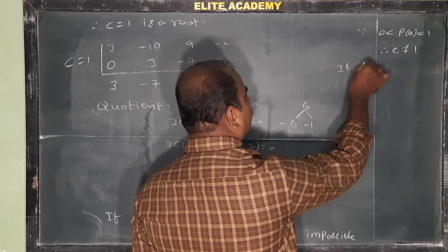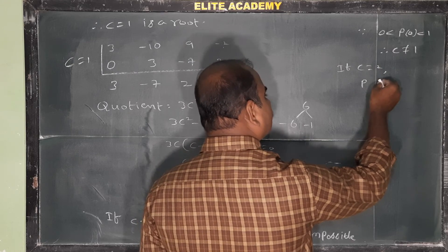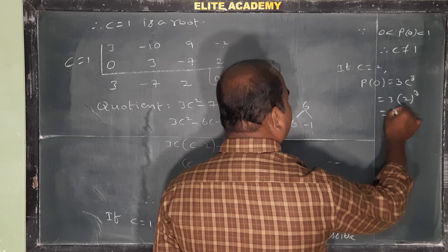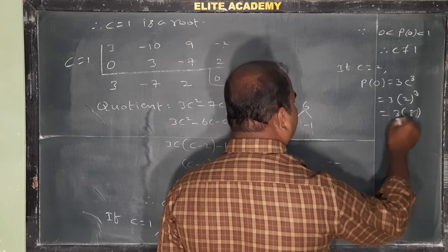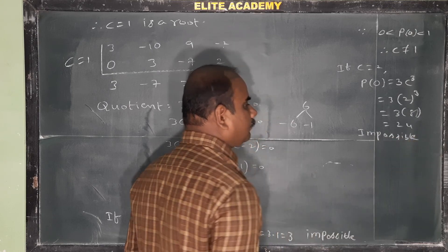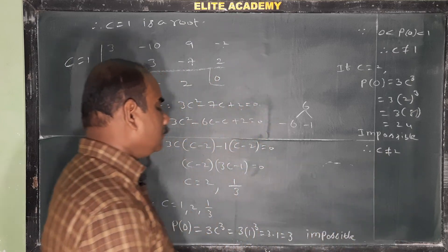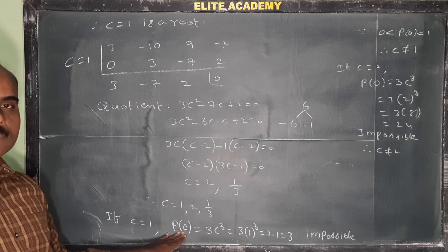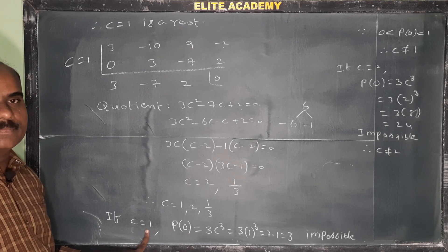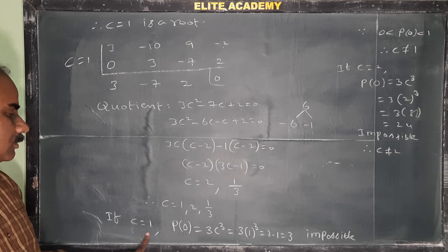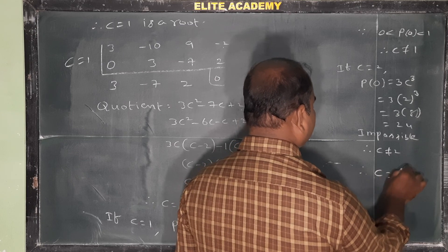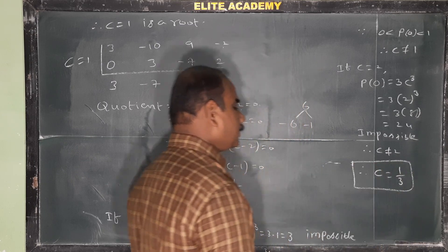If c = 2: P(0) = 3c³ = 3×8 = 24, which also exceeds 1, so c = 2 is also impossible. Since c = 1 and c = 2 are both invalid, the only remaining value is c = 1/3. Therefore c = 1/3 is our answer.